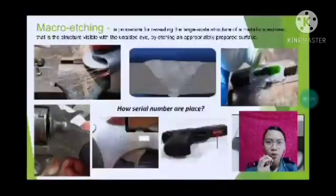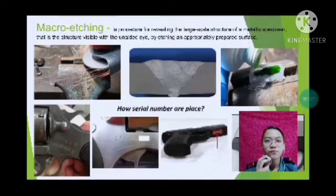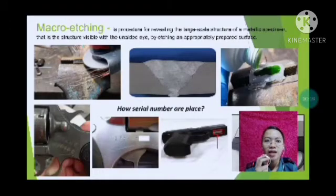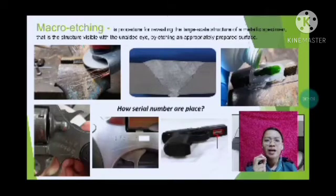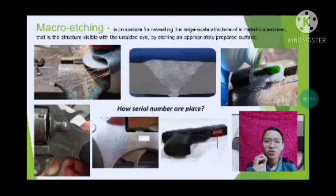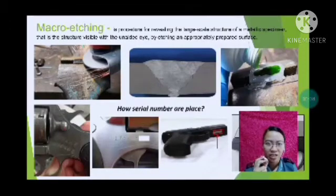What is macro aging? Macro aging is a procedure for revealing the largest kill structure of a metallic specimen — that is, structure visible with the naked eye. Macro aging is applied especially in crime scene investigation by police officers, particularly for collected evidence like guns where the serial number cannot be seen. It is applied to reveal or identify unidentified materials.